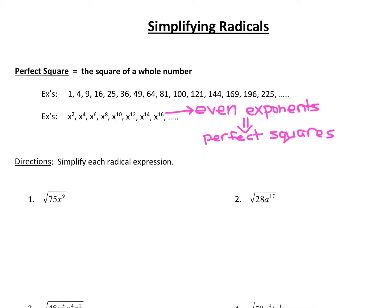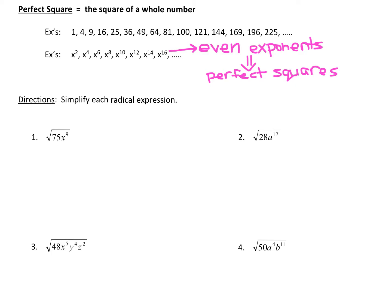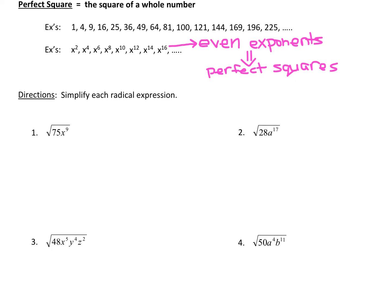So now we're going to take a look at some examples on the bottom here. If we take a look at number 1, we can see that 75 is not a perfect square, and x to the 9th is not a perfect square because it's not an even exponent. So what we want to do to simplify this radical is we want to try to get as many perfect squares as we can out of this radical.